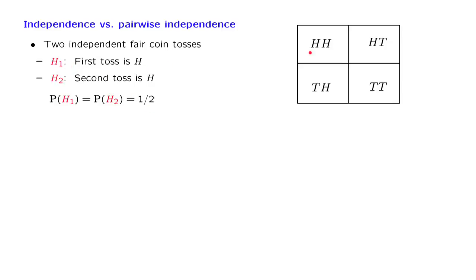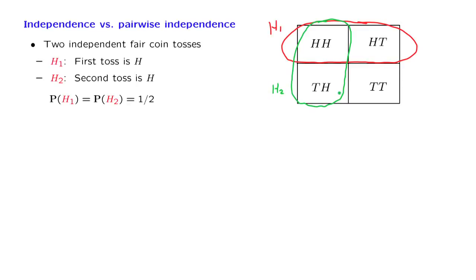Let h1 be the event that the first coin toss resulted in heads, which corresponds to this event in this diagram. Let h2 be the event that the second toss resulted in heads. Since we assume the tosses are independent, the event heads-heads has probability equal to 1/2 times 1/2, so the product is 1/4.